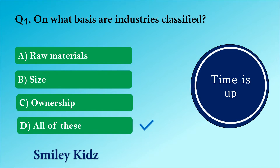The right answer is option D. All of these. Industries are classified on the basis of their raw materials, size and ownership.